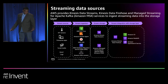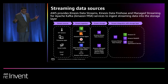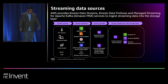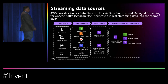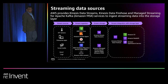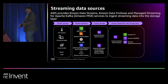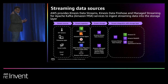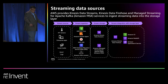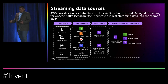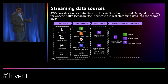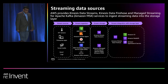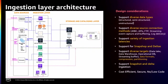Streaming data sources: streaming data includes log files generated from your applications, IoT sensor data, and social media feeds. Use IoT Core to ingest IoT sensor data into Amazon Kinesis Data Streams or Amazon MSK. Use Amazon Kinesis agent to ingest streaming data into Kinesis Data Streams. Use Amazon MSK Connect to ingest streaming data into Amazon MSK. Use Database Migration Service for change data capture use cases. You can use AWS SDK to bring streaming data from your applications. This is the ingestion layer architecture to enable diverse data types and diverse data sources.